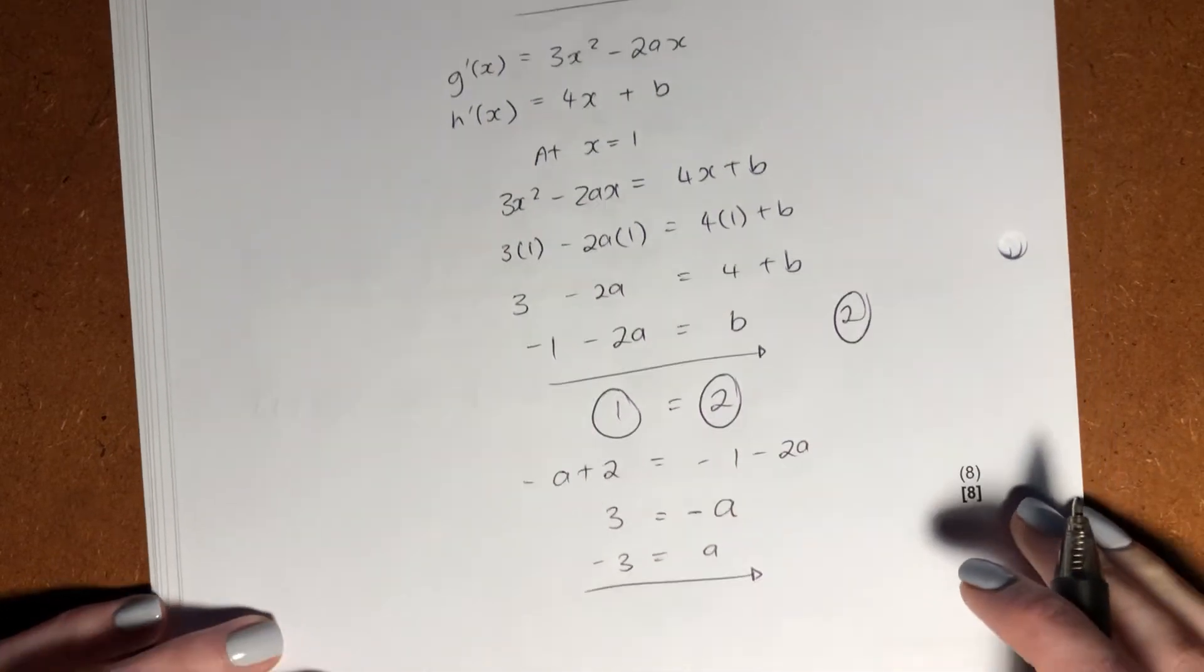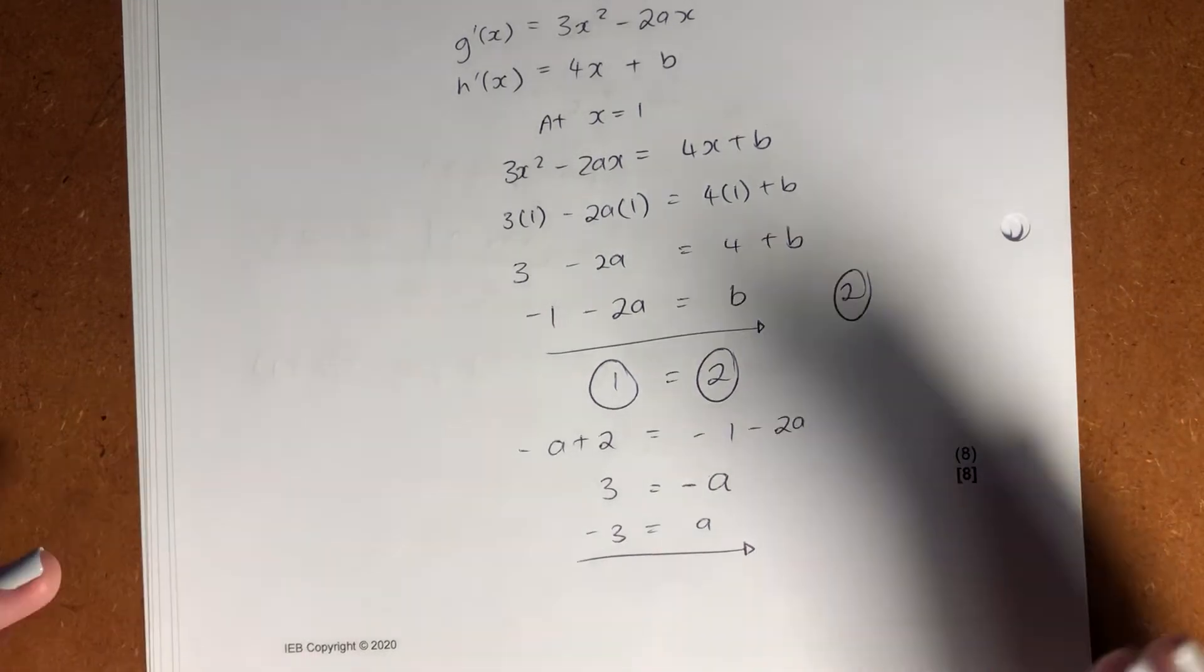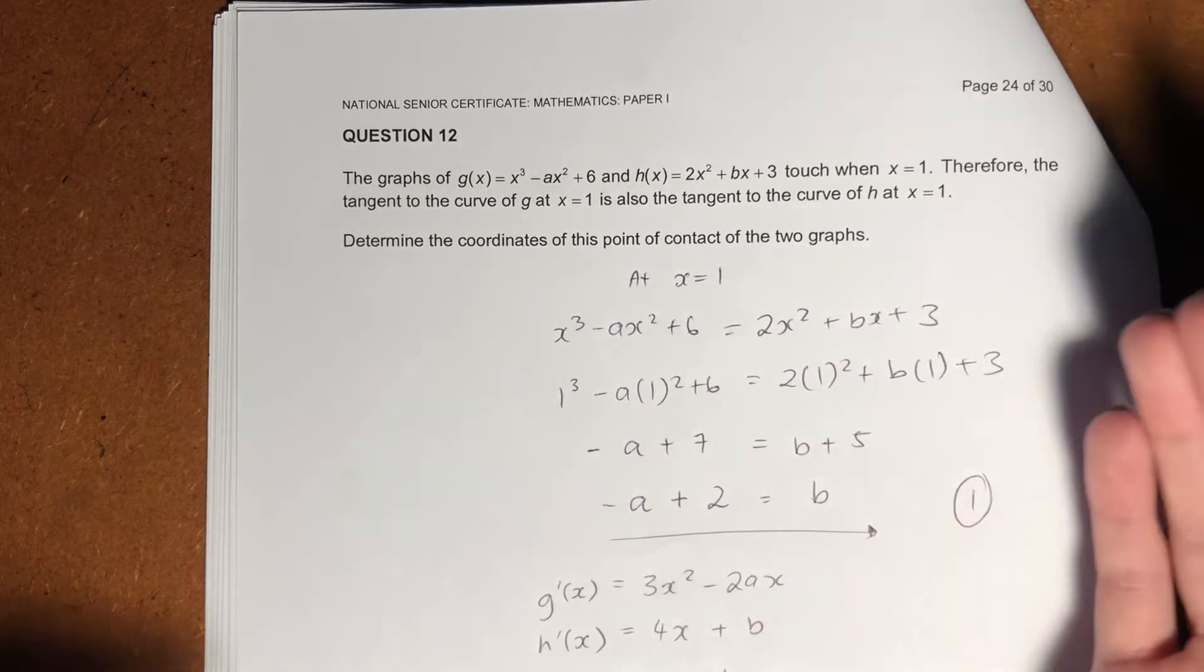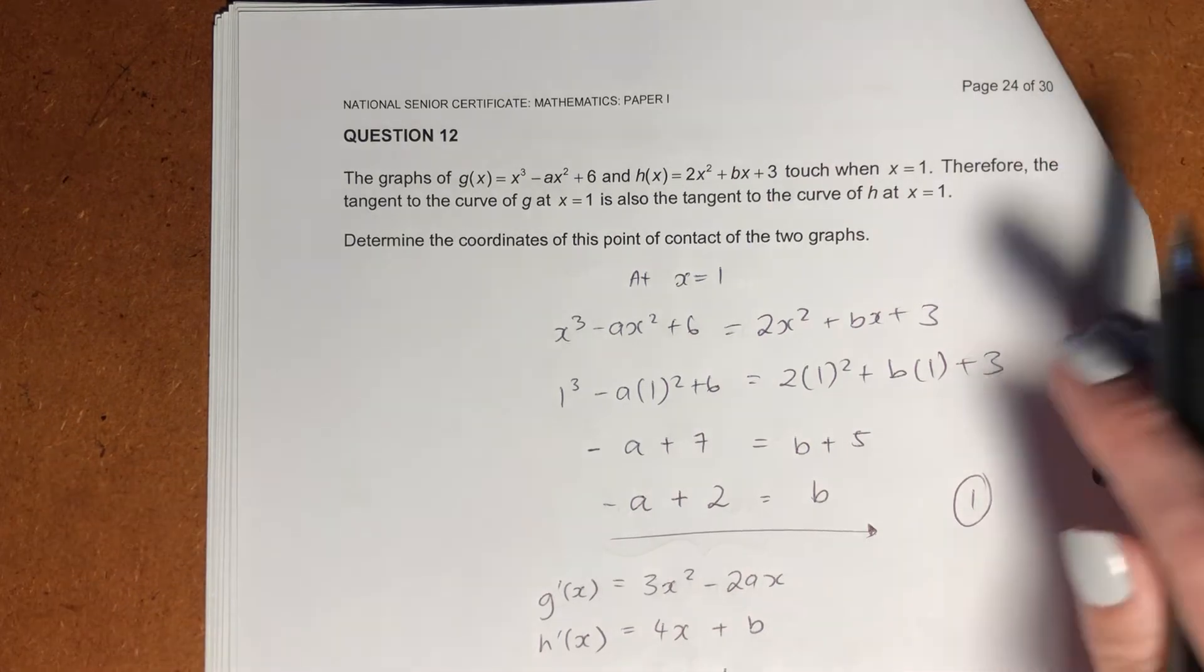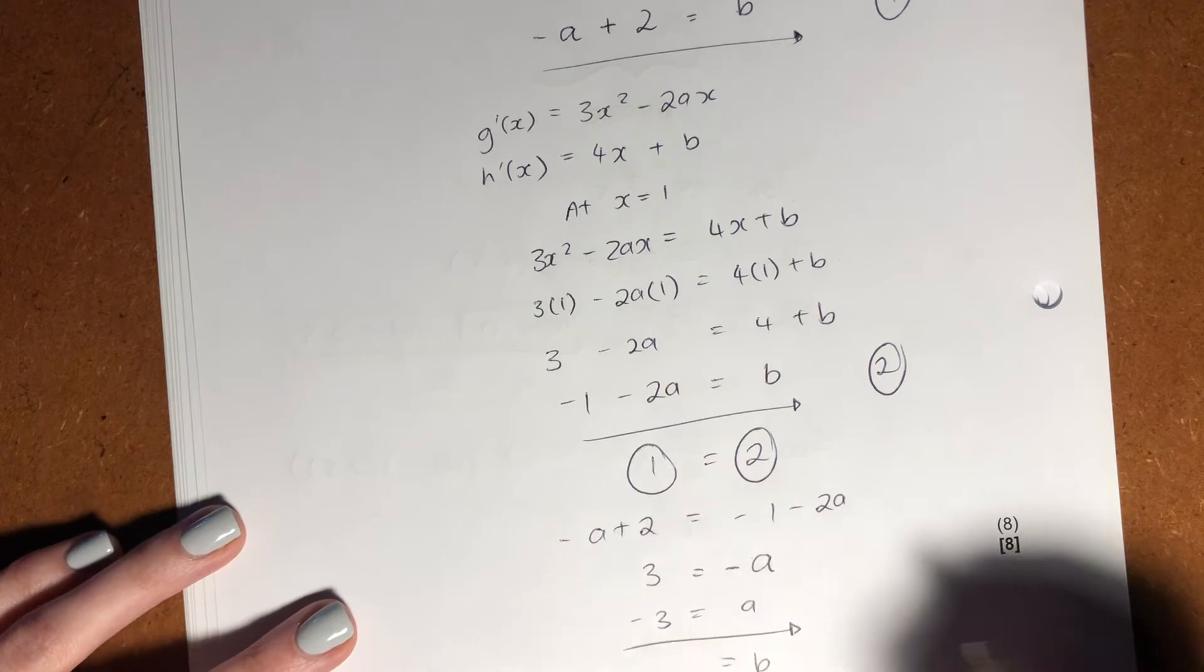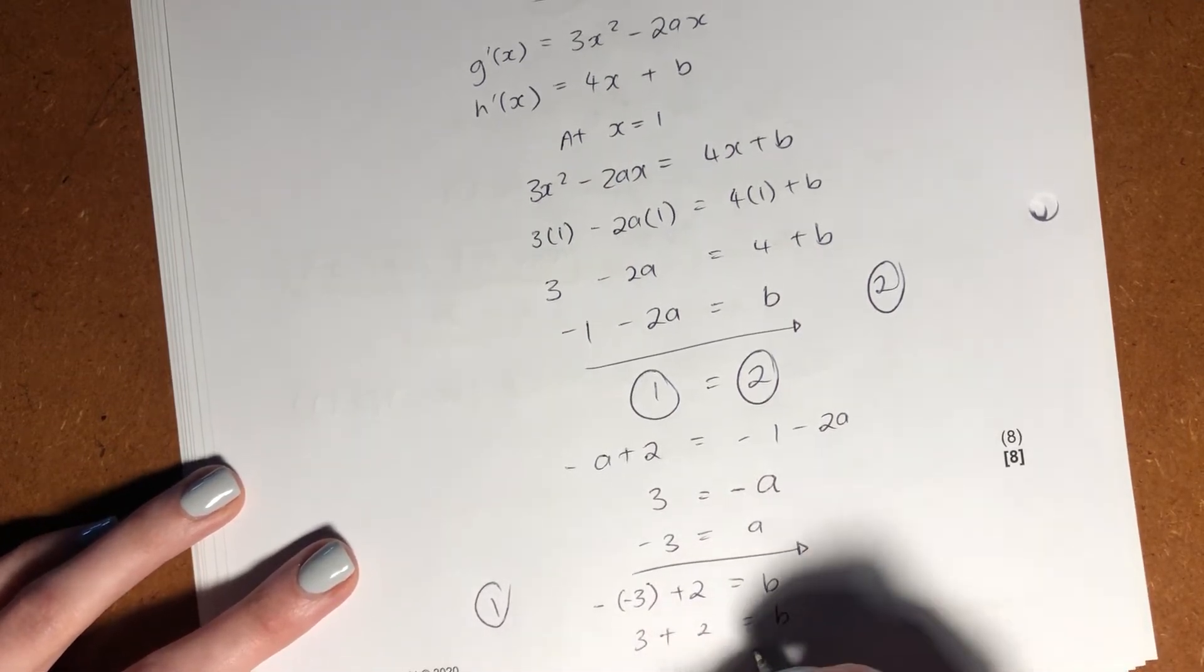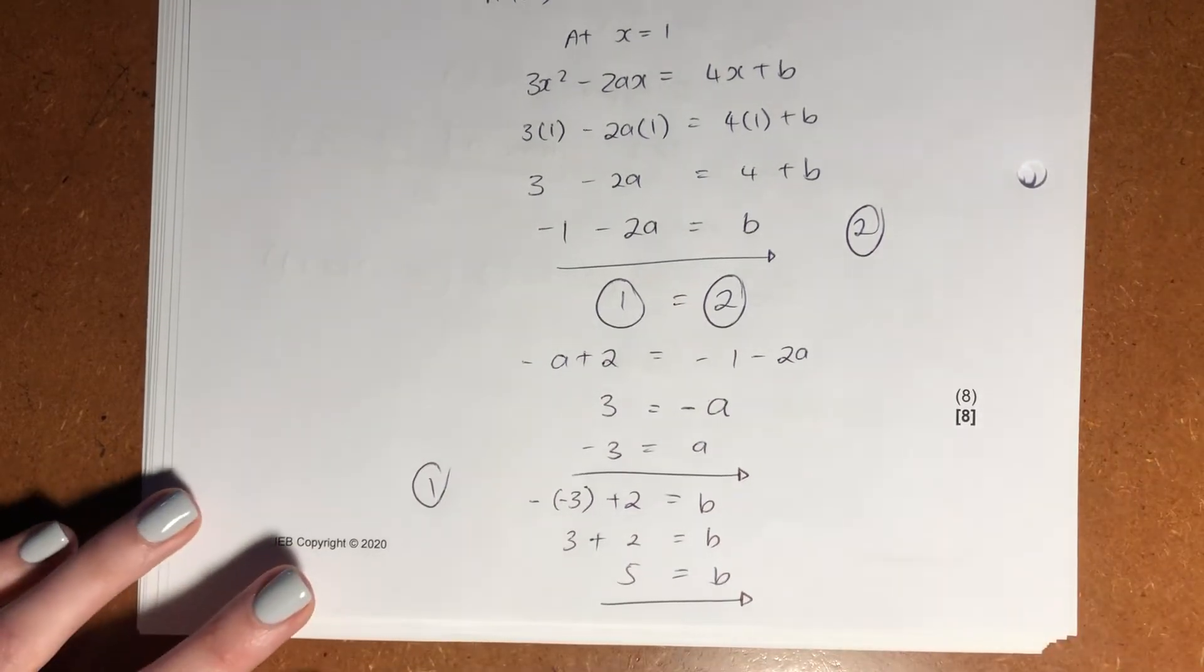So now I've solved for a. Okay. Now, you could be thinking to yourself, well, why am I doing this again? Like now I found a and now I can find b. What am I doing? Remember, if you can find a and b and then you sub in 1, you've then found the point of intersection. So finding a and b helps us find that point of intersection. So we found a. Let's now find b. Right. We know that b equals negative a plus 2 from number 1, which is just 3 plus 2 equals b. So b equals 5. Okay. Right. So now we've got a and b.